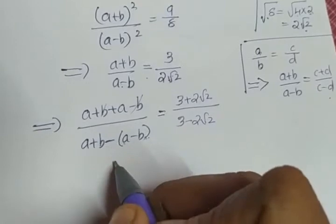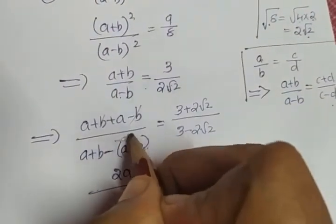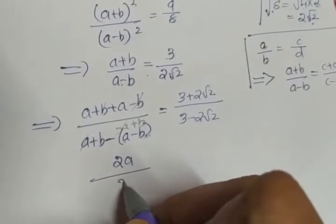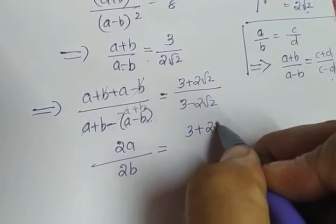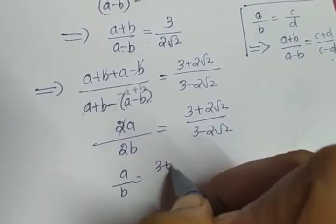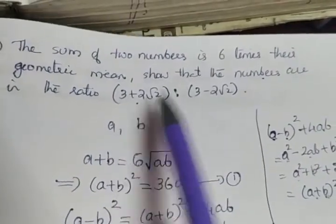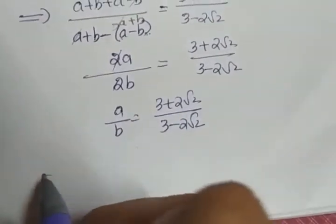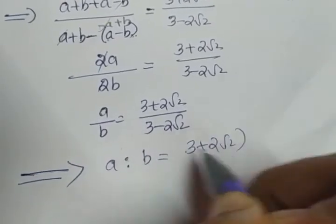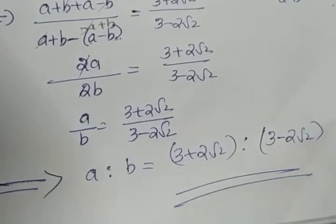Minus B and plus B get cancelled giving 2A in the numerator. Opening the bracket gives minus A plus B, so minus A gets cancelled giving B plus B which is 2B. What we get is 2A by 2B equals 3 plus 2 root 2 divided by 3 minus 2 root 2. The 2 gets cancelled giving A by B as 3 plus 2 root 2 divided by 3 minus 2 root 2. Our question was to show that the numbers are in the ratio 3 plus 2 root 2 is to 3 minus 2 root 2, which is proved since A to B equals 3 plus 2 root 2 is to 3 minus 2 root 2.